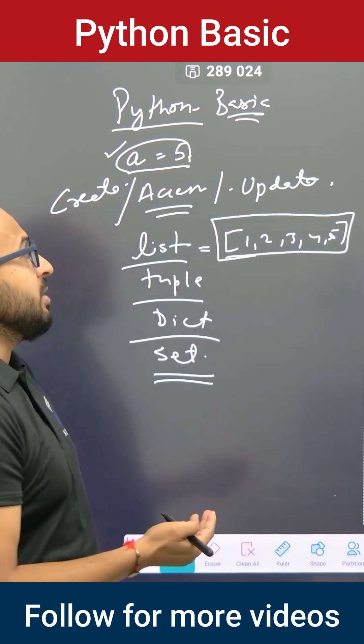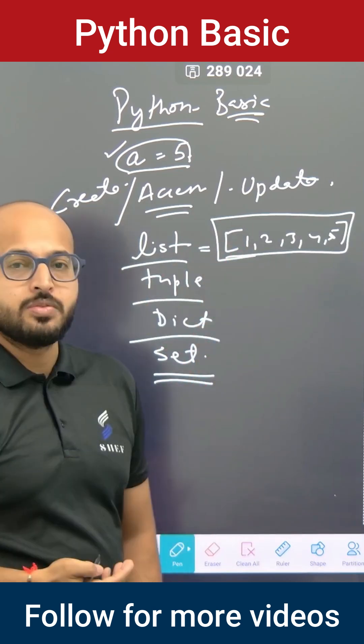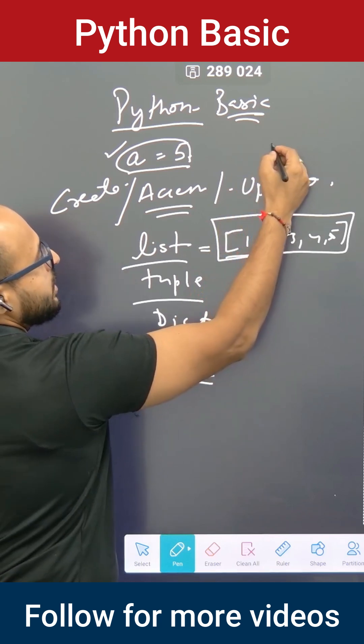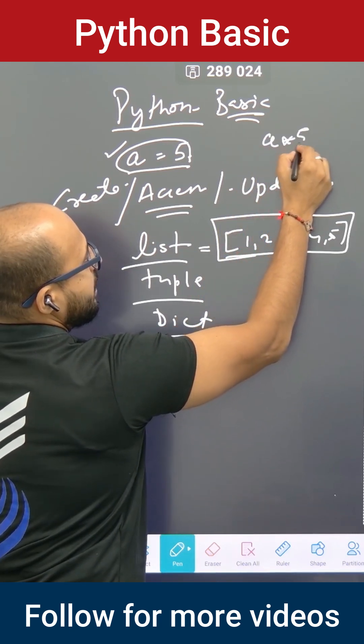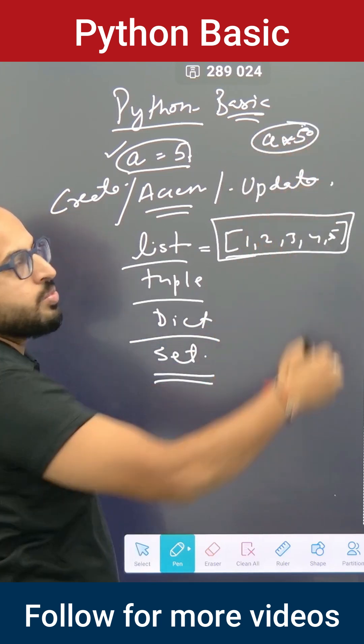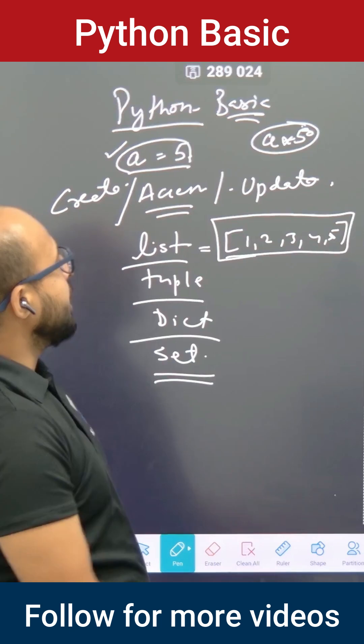Accessing means I am accessing the elements of this list. Like here, if I say I am accessing a equals five, suppose if I wanted to do some operation like a multiplication by five or a multiplication by 50, then it will give me the output as 250.